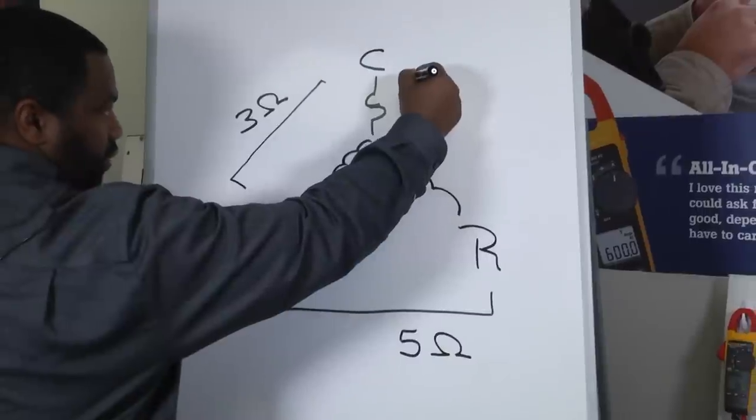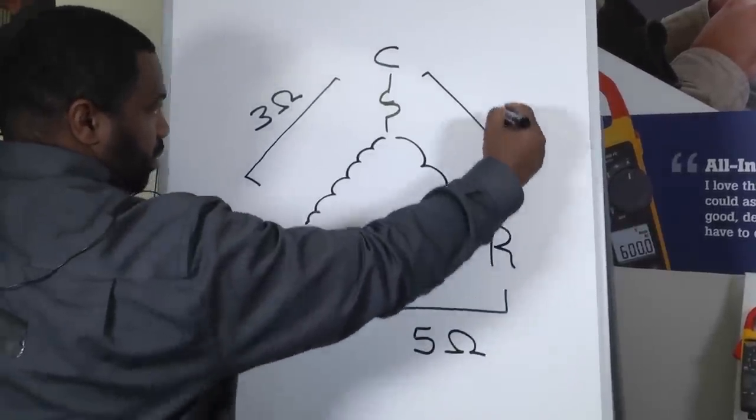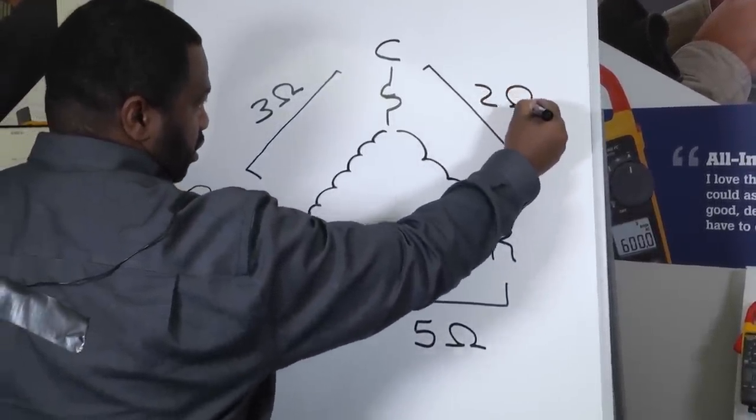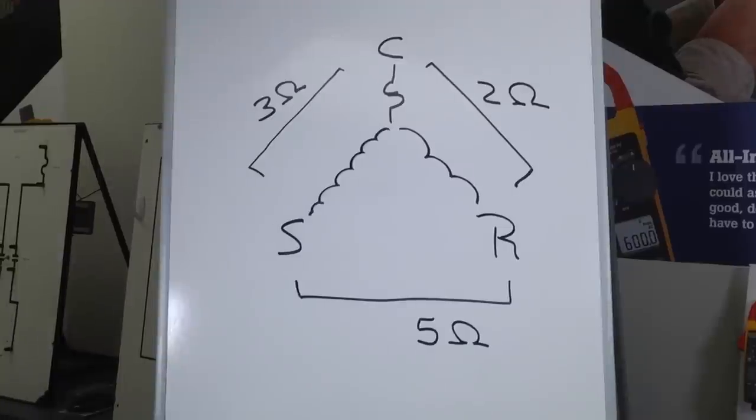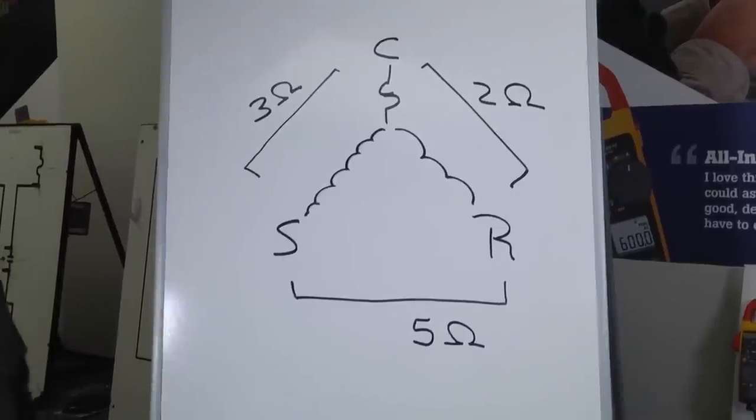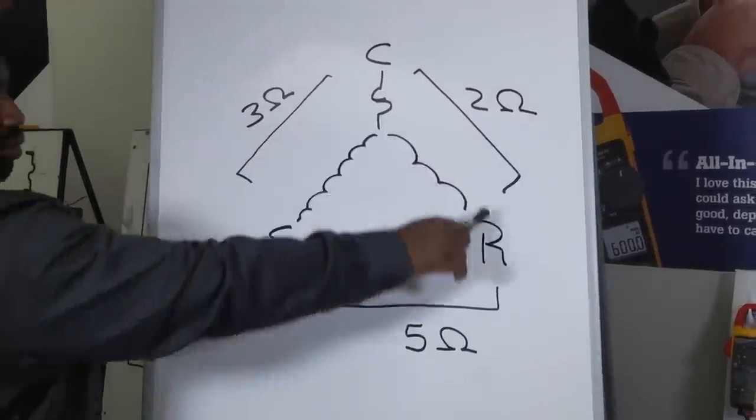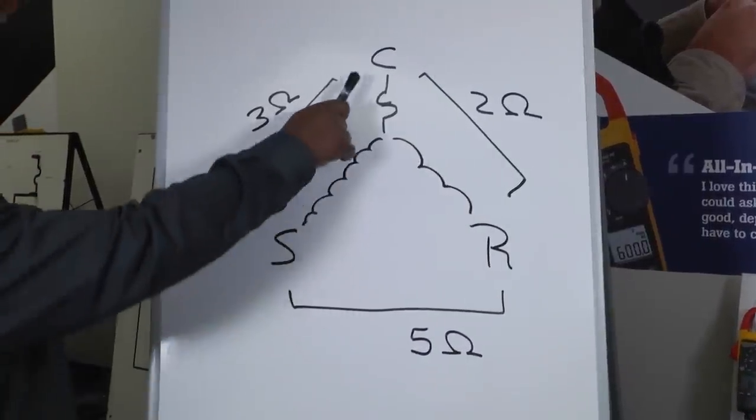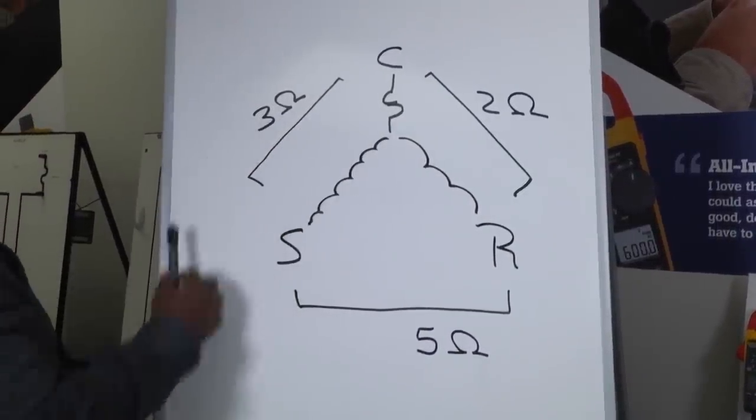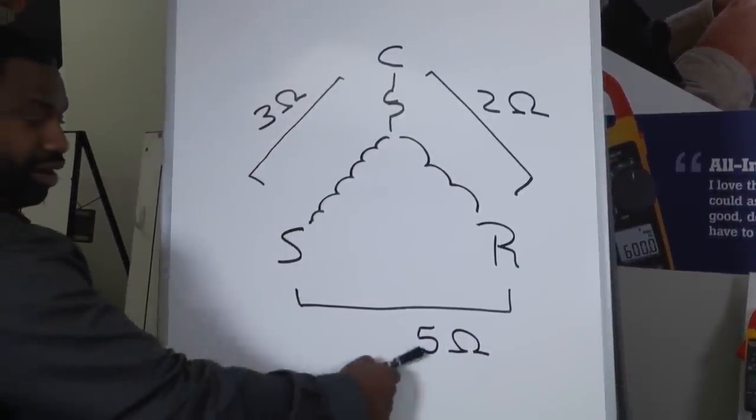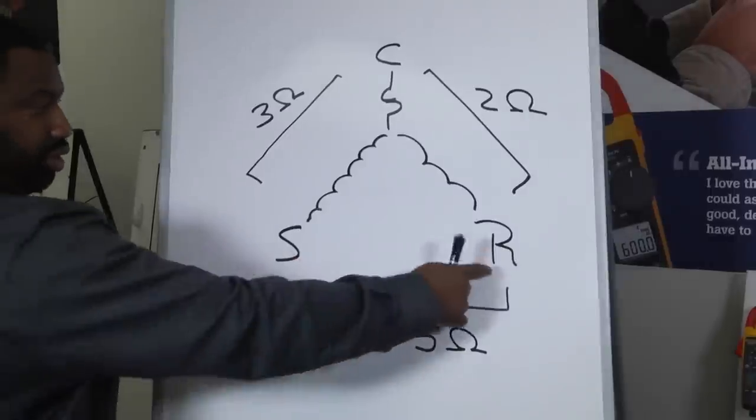And then from start to run we had five ohms. And then of course from common to run we would have two ohms. One of the ways that we can tell that everything's working is because our common to run, two, plus our common to start, three, should equal or be very close to our start to run winding.